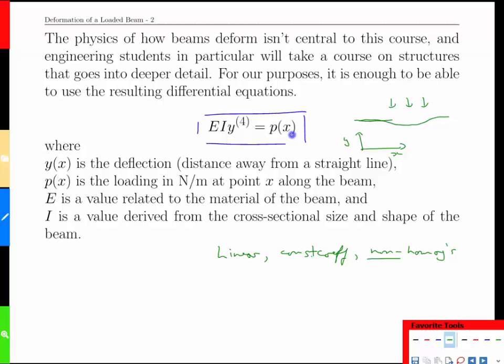Because the load, p of x, represents the external load or the forces being applied to the beam, and they end up on the right-hand side because they're not involved with the internal mechanics.